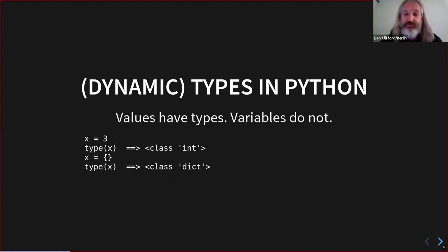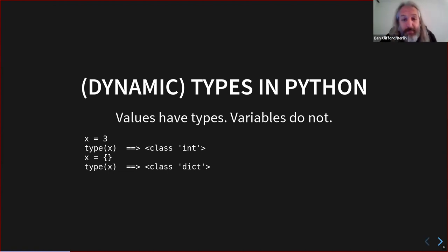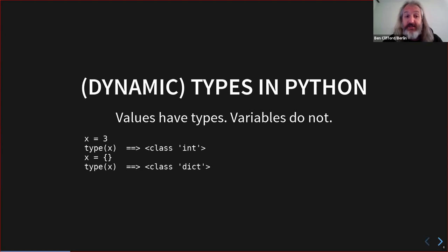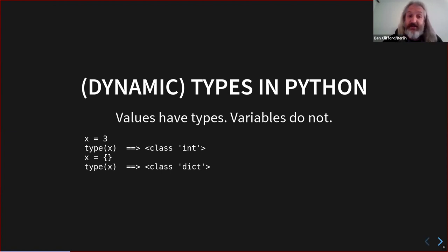I'll briefly introduce what types look like in normal Python without any static type checking. Values have types; variables don't have types. Here's a variable x — I can put the integer three into x and ask for the type, and it tells me int. In the same x I can put the empty dictionary and ask for the type of that value, and it's a different type. The values have strongly defined types, but the variables do not.